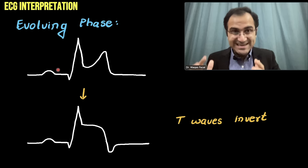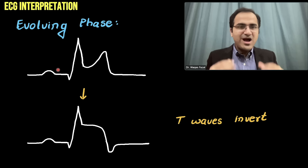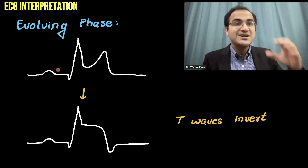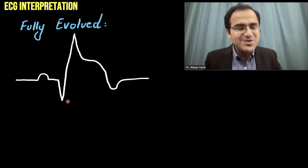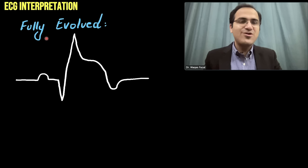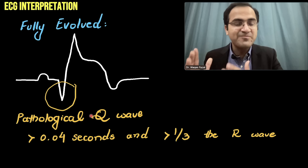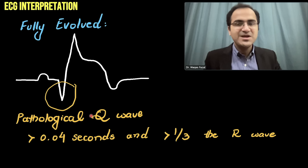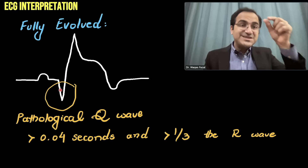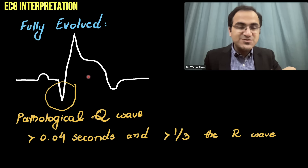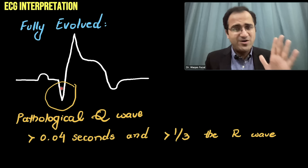Up to this point, there is essentially ischemia going on — the heart tissue is not yet dead, there is no infarction. To know that infarction has occurred and tissue is dead, you look at the Q waves. If there are deep, pathological Q waves, it means this is no longer just ischemia — this is infarction and the tissue is dead.